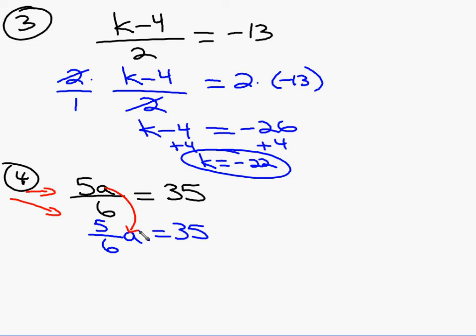Now we just multiply both sides by the reciprocal. So I'm going to multiply the left side by six over five and the right side by six over five. On the left side, everything goes away and I just have an a. On the right side, I put the thirty-five over one and do my factoring. Five divided by five is one. Thirty-five divided by five is seven. The answer is forty-two.